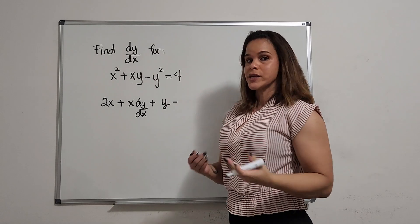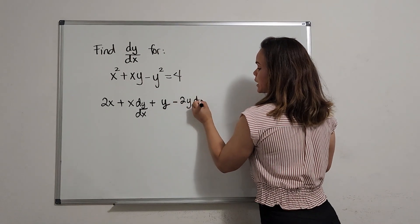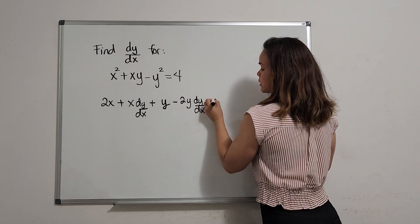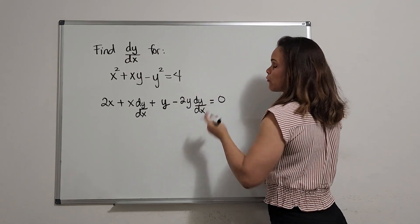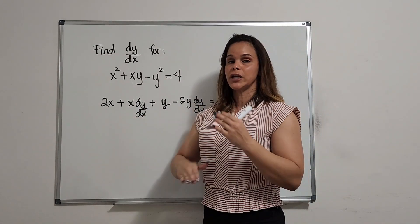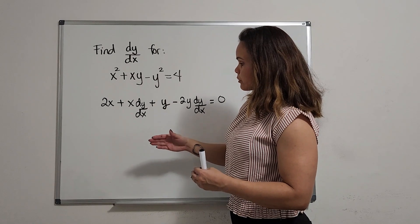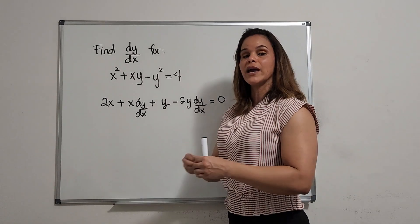Minus the derivative of y squared. The derivative of y squared is going to be 2y, and we put the last name dy dx. Equal to the derivative of 4, which is 0. Now that we have differentiated all the terms here, we need to say explicitly what dy dx is going to be.